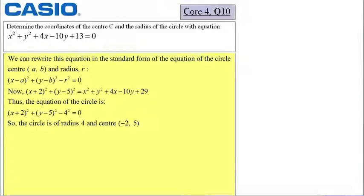In question 10, we need to determine the coordinates of the centre C and the radius of the circle with equation x squared plus y squared plus 4x take away 10y plus 13 equals 0. You can see that I found the circle to have a centre at minus 2 comma 5 and a radius of 4.